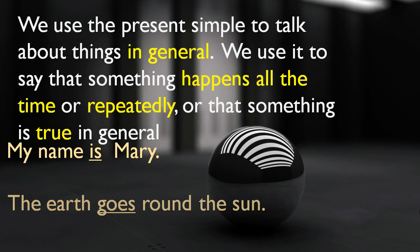We use the present simple to talk about things in general. We use it to say that something happens all the time or repeatedly, or that something is true in general. So highlight these four key words: in general, all the time, repeatedly, and something is true.